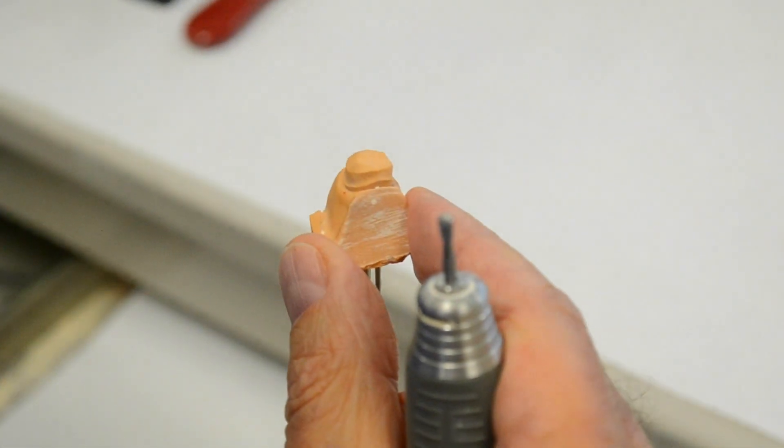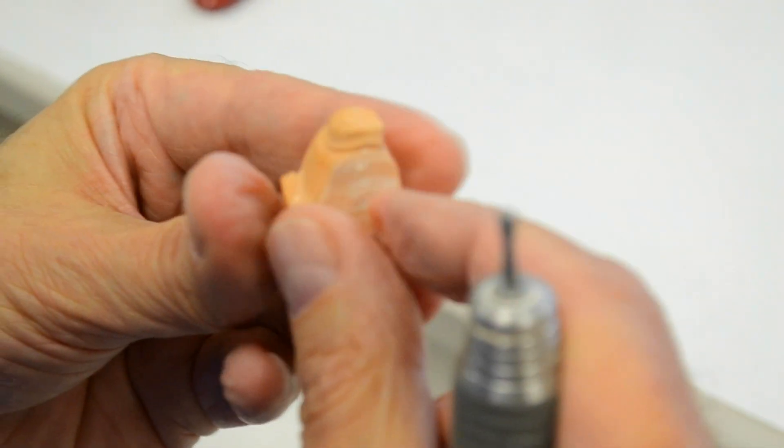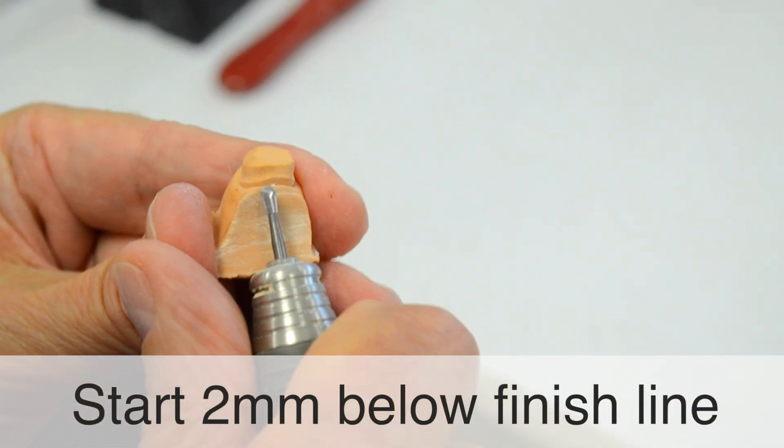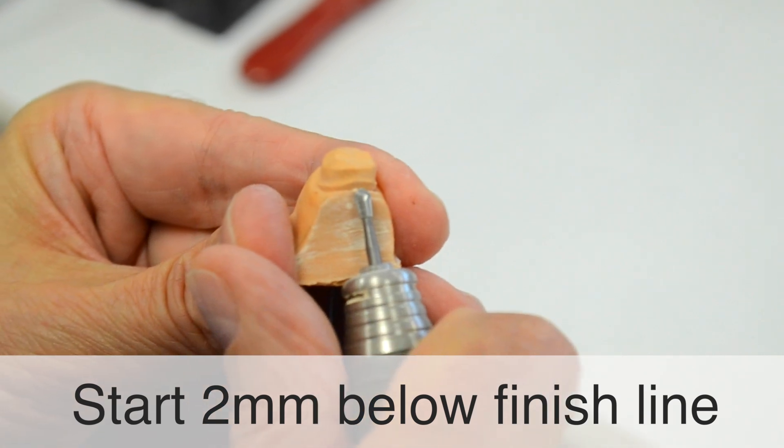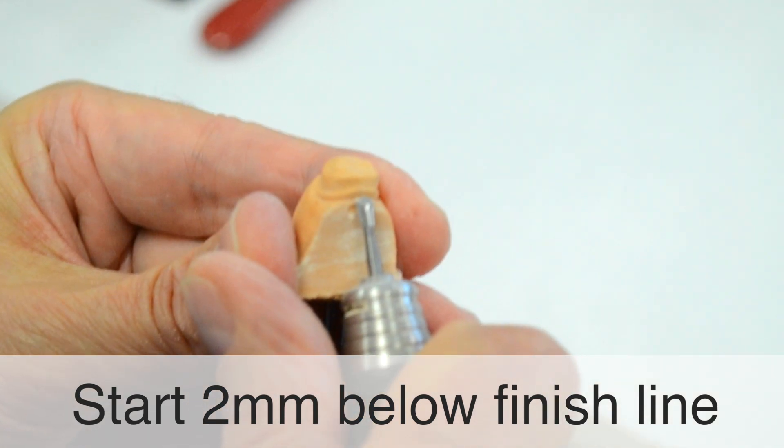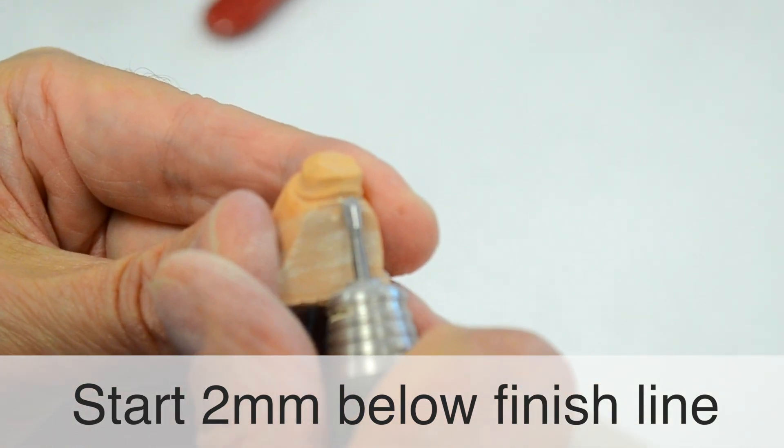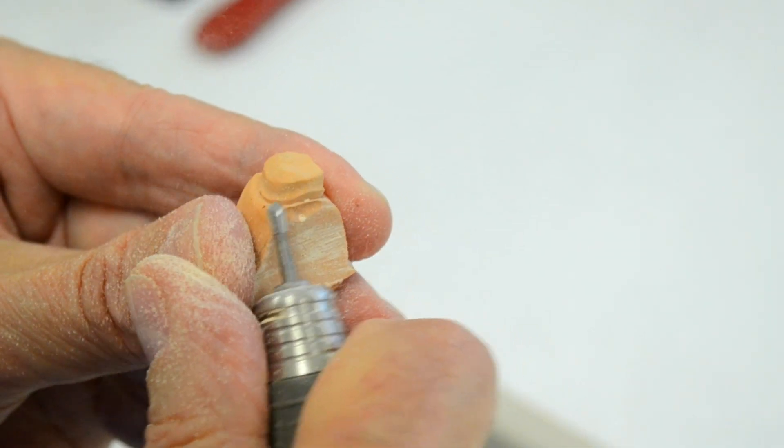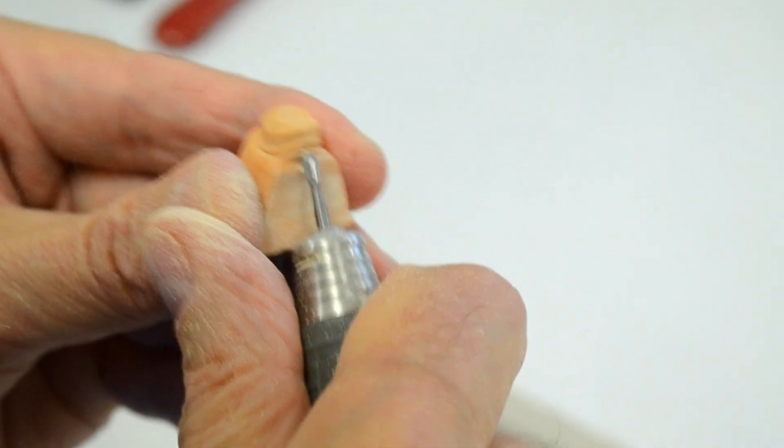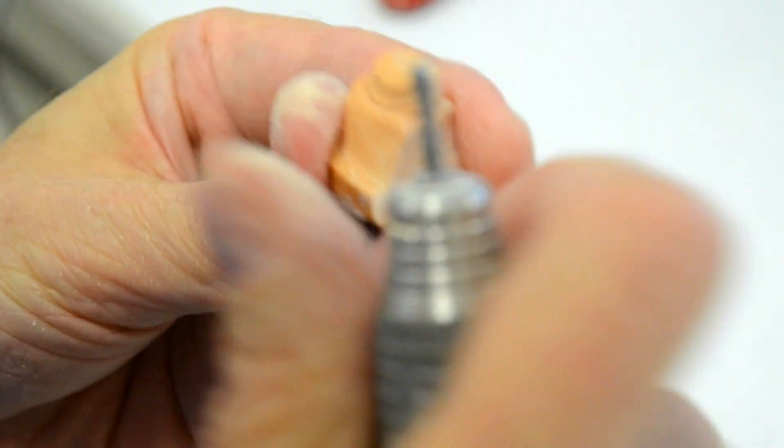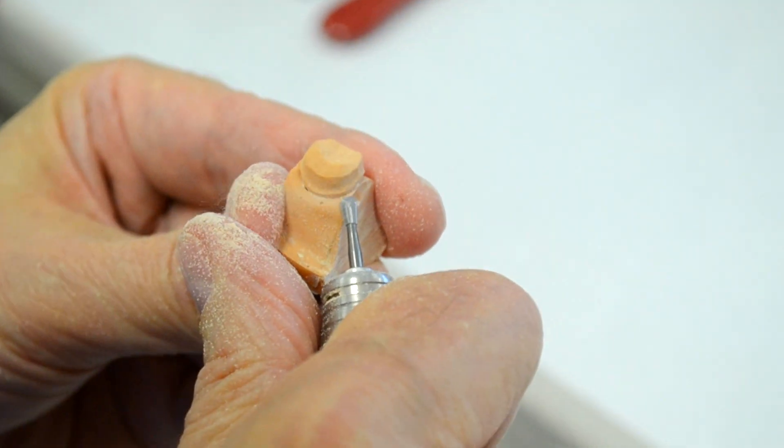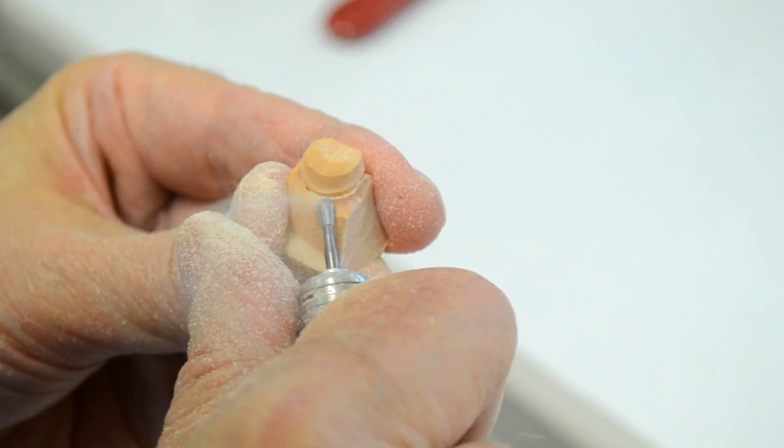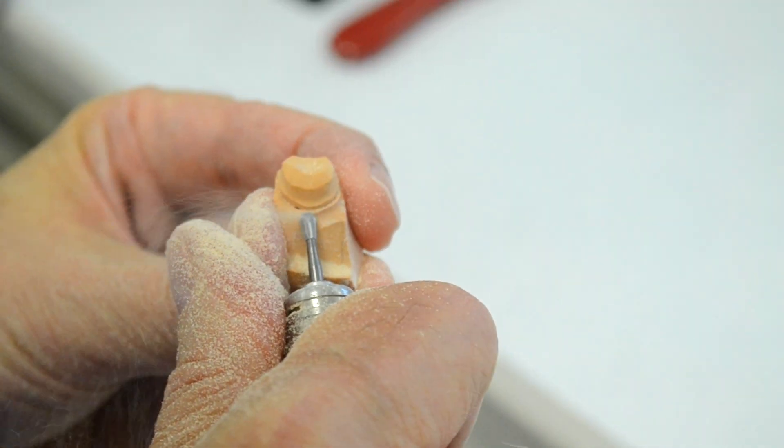We're going to begin using magnification. We're going to begin the die trimming process. We'll start trimming the die at approximately two millimeters apical to the finish line, and we do that simply by applying light pressure and a good finger rest, thumbs resting against one another. We slowly engage the burr, remaining all the while at least two millimeters below the free gingival margin.